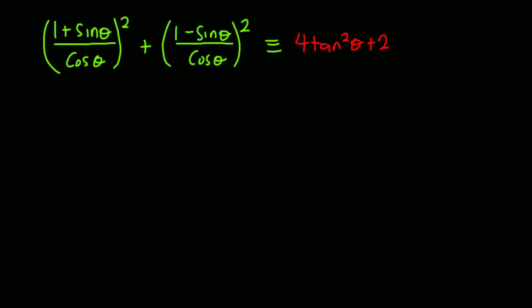Hi guys. Welcome once again to Paul in Science and Maths TV. In this video, we are to prove that [(1 + sinθ) / cosθ]² + [(1 − sinθ) / cosθ]² is equal to 4tan²θ + 2.